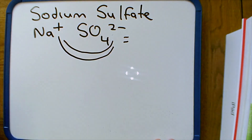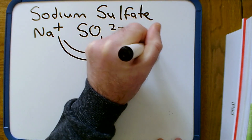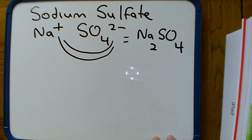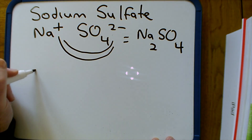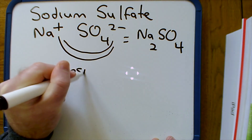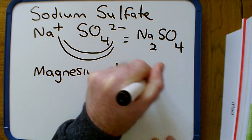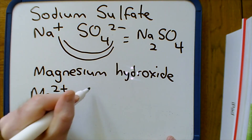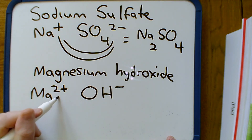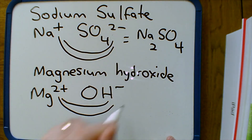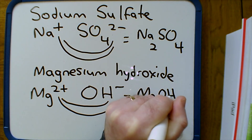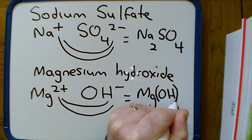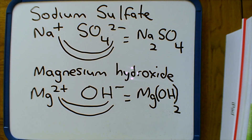For magnesium hydroxide: Mg2+ ions and OH− ions, where the OH− is the molecular ion. How many OH− ions do I need to cancel the 2+ charge? Two. So the formula is Mg(OH)2, or simply swap the numbers over to get Mg(OH)2. It's important to put brackets around the O and H because we have two OHs. Without brackets it looks like we have one oxygen and two hydrogens, but we actually have two oxygens and two hydrogens.